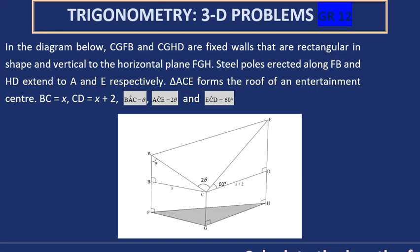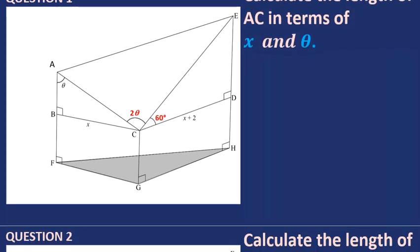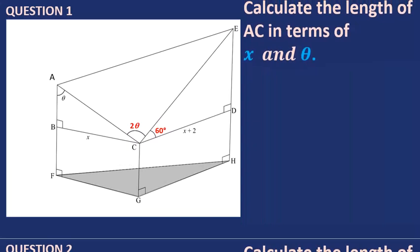Question one: calculate the length of AC. This is the length we're looking for — AC in terms of x and theta. To calculate AC we use this triangle. We have angle theta, which has an opposite side x, and we are looking for the hypotenuse. Opposite over hypotenuse is sine.